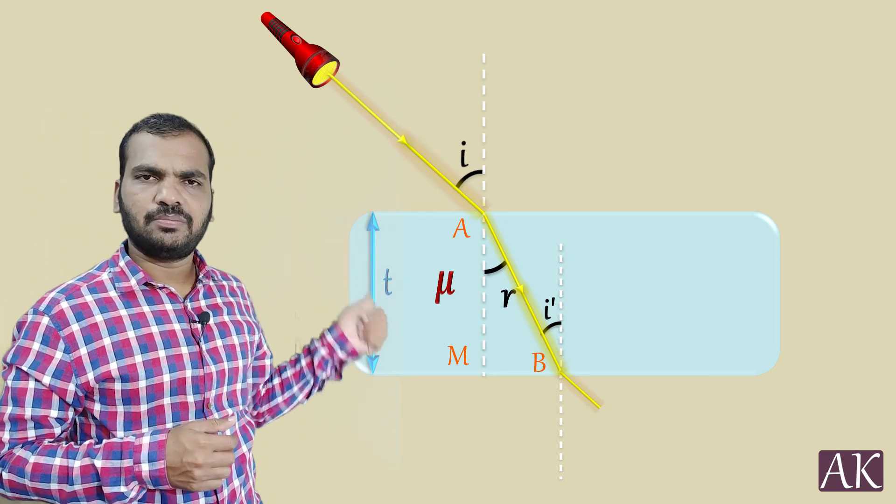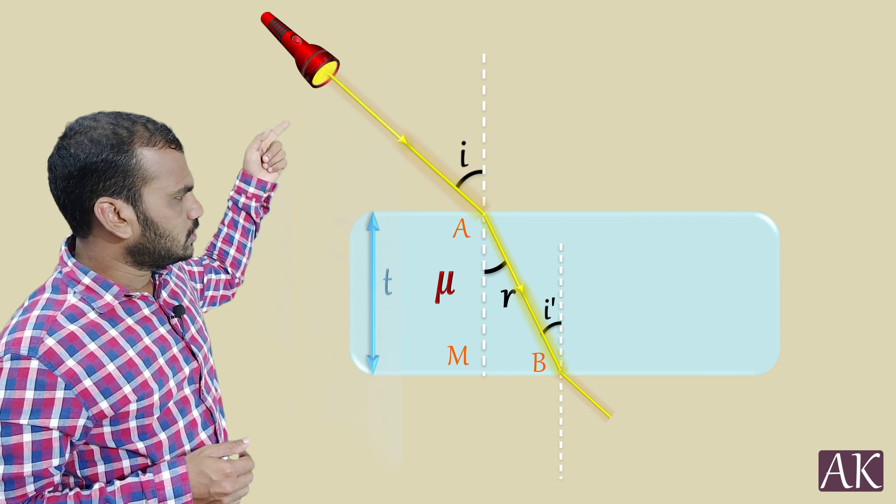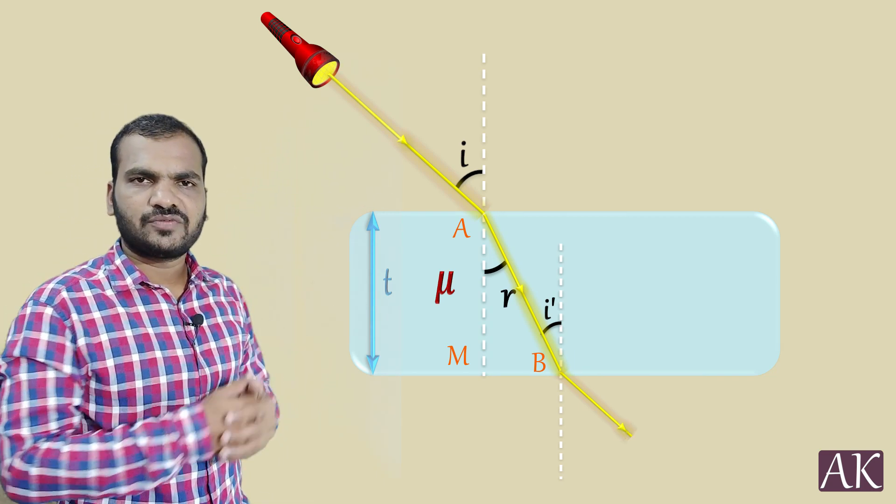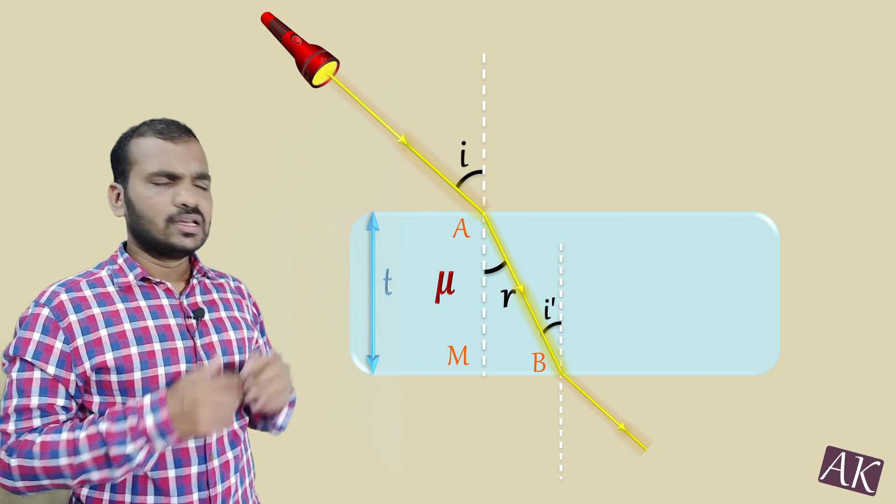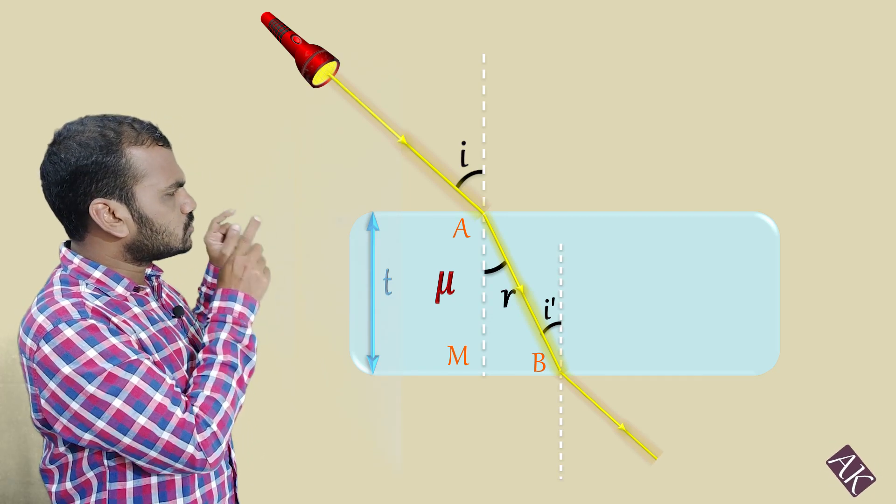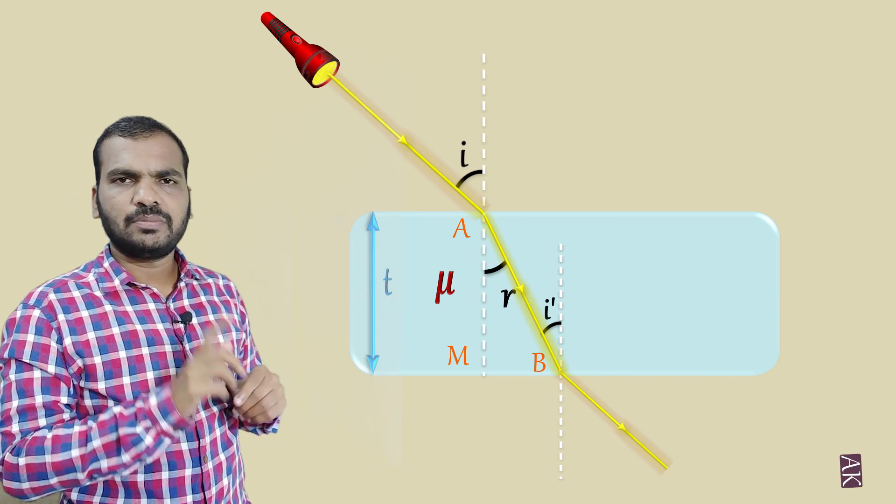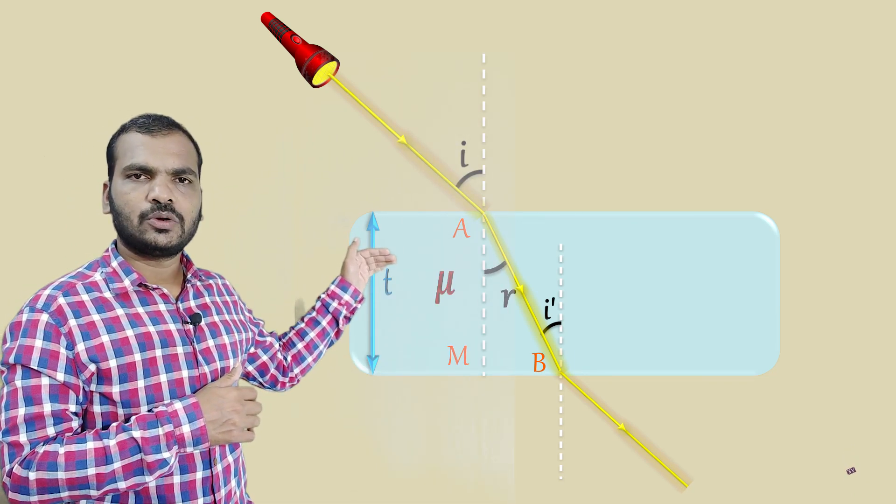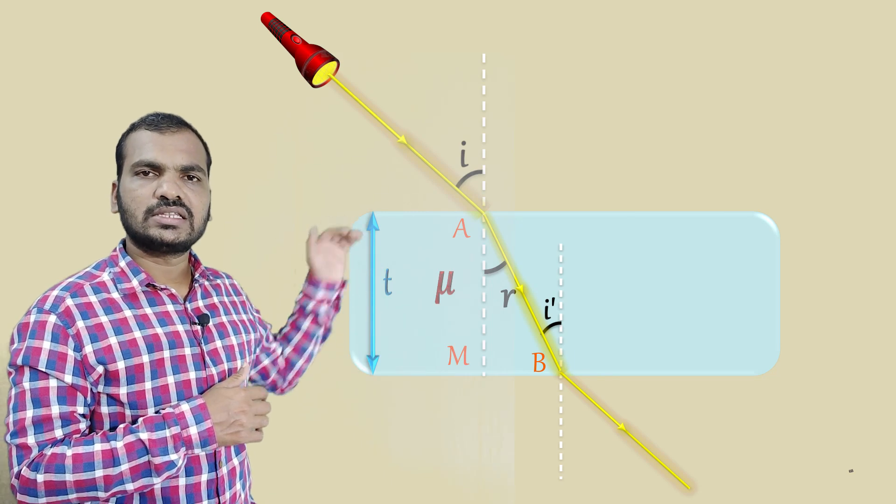You can use Snell's law at A and B as mu 1 to mu 2 or mu 2 to mu 1. Like mu 2 is glass refractive index, mu 1 is air refractive index. Then as you know reciprocal, so E is going to be I. That means the emerging ray is parallel to the incident ray.